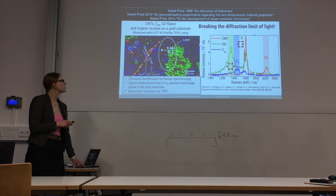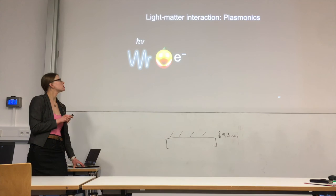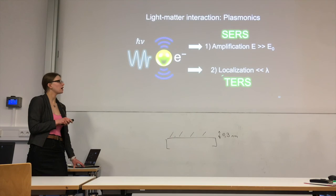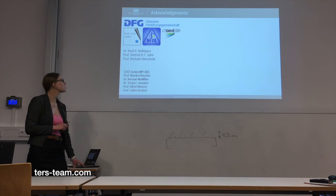So we have done chemical identification using Raman spectroscopy — we identified the materials, enhanced the signal, and obtained nanoscale resolution. All of that is thanks to plasmons: the oscillations of the electron cloud in gold nanoparticles, which enhance the signal and create nanoscale resolution for us. With that I would like to thank the funding agencies and everybody who contributed to this work, and thank you for your attention — please feel free to ask more questions.